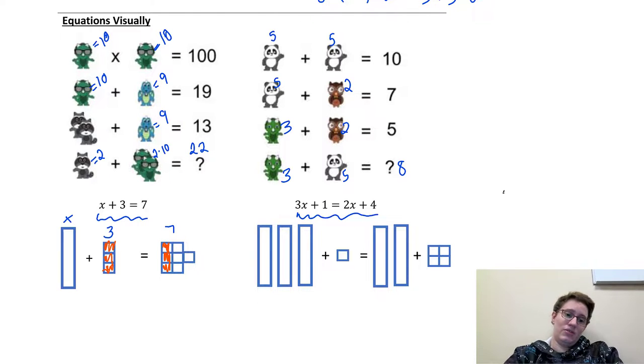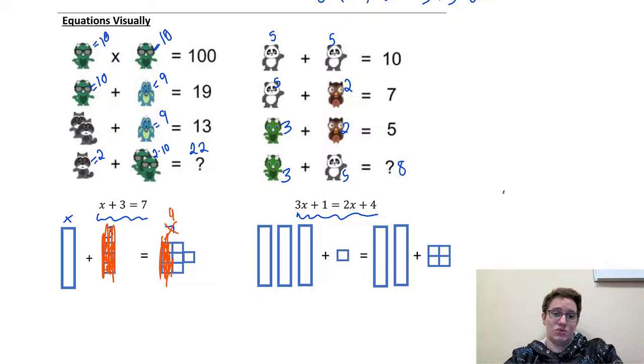But now, if we're saying, hey, this is no longer there, this is no longer there, and now it's a 4, what we have left is this x rectangle, and then it equals 4. So, that's a way to visually see how to solve it.